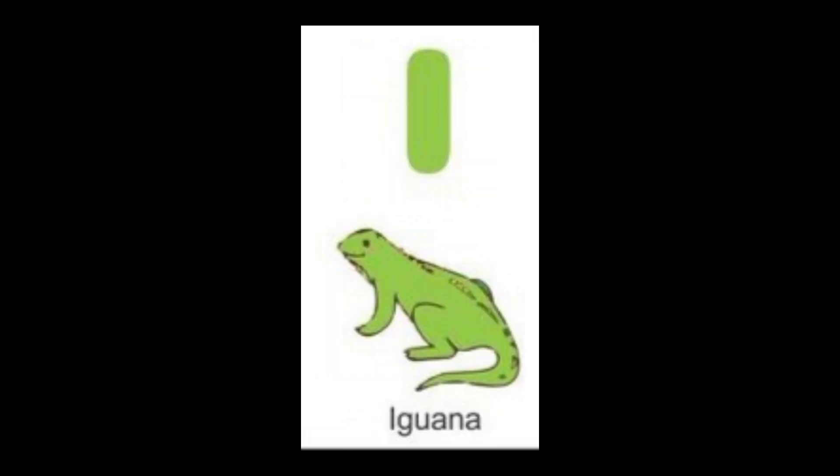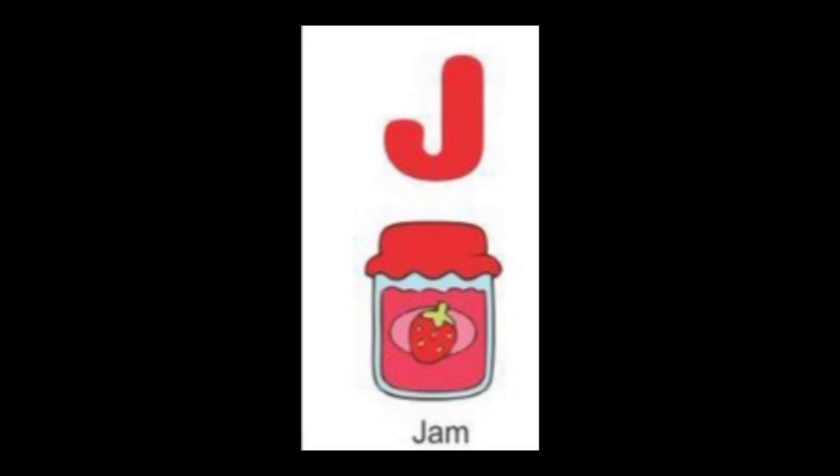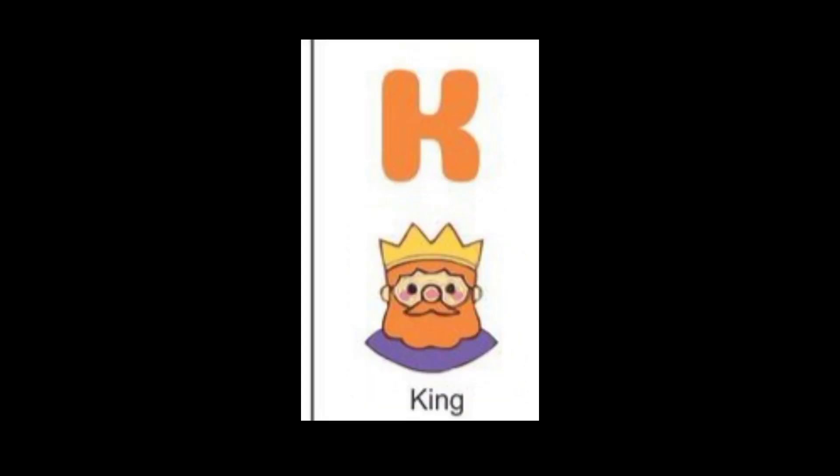The next letter is I. I for iguana. The color of iguana is green. And the next letter is J. J for jam. The color of the jam is red.